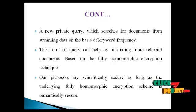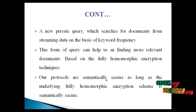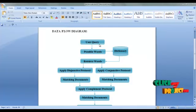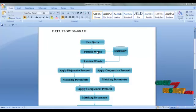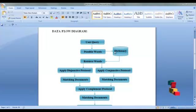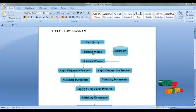Our protocols are semantically secure as long as the underlying fully homomorphic encryption scheme is semantically secure. Now see the DFT process. The user selects the query, then processes the query and evaluates some possible words from the user query. These keywords are checked to determine whether they are possible words, using the dictionary. These words are then analyzed and possible words are retrieved from the dictionary.